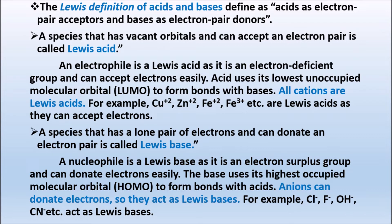Lewis Definition of Acid and Base: According to Lewis theory, acid is an electron pair acceptor and base is an electron pair donor. So according to Lewis acid-base theory, acid is the substance which accepts an electron pair, and base is the substance which donates an electron pair.